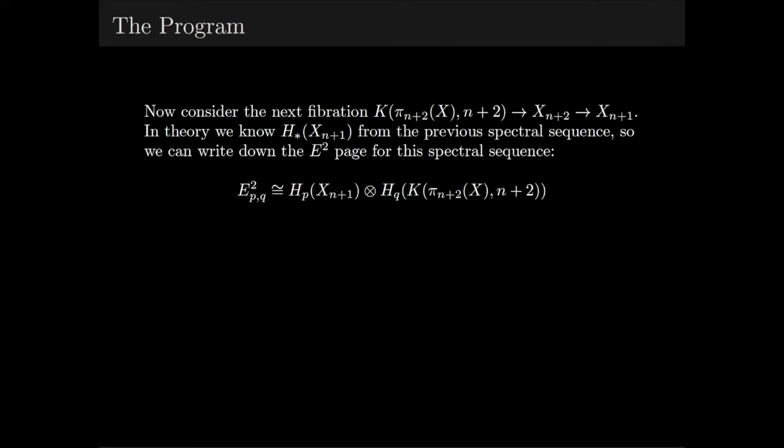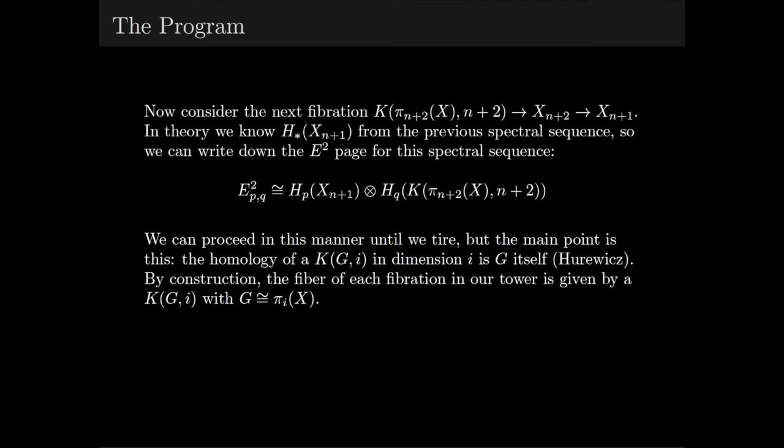Assuming we've finished computing the homology of X_{n+1} using our spectral sequence, we can move to the next level, where we have a fibration inducing another Serre spectral sequence. Of course, there's theoretically nothing stopping us from continuing indefinitely, but the idea is that the fibrations in our Postnikov tower take very nice forms, having Eilenberg-MacLane spaces as the fibers.